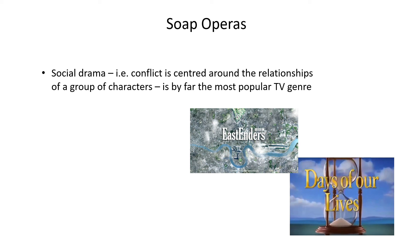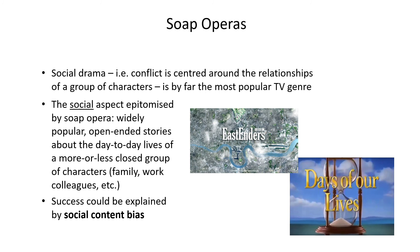Social dramas — those where conflict is centred around the relationships of a group of characters — are by far the most popular TV genre. The social aspect of this drama is epitomised by soap opera. These are widely popular, open-ended stories about the day-to-day lives of a more or less closed group of characters, such as a family or work colleagues. Examples from the UK include EastEnders or Coronation Street, while internationally examples might be the American Days of Our Lives or the Australian Soap Neighbours. The success of these soap operas may be explained by their appeal to social content bias.